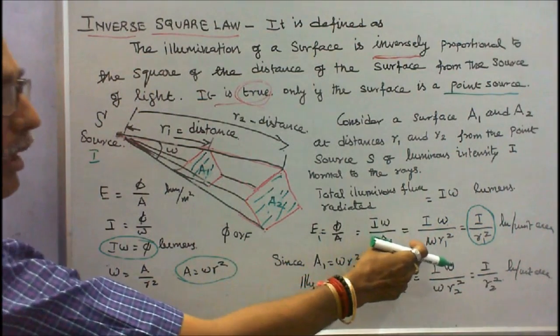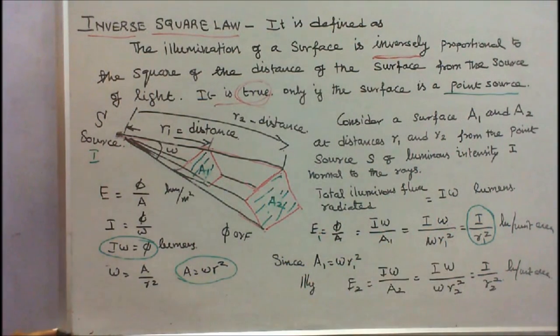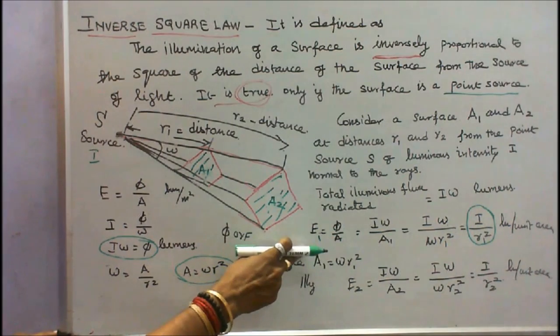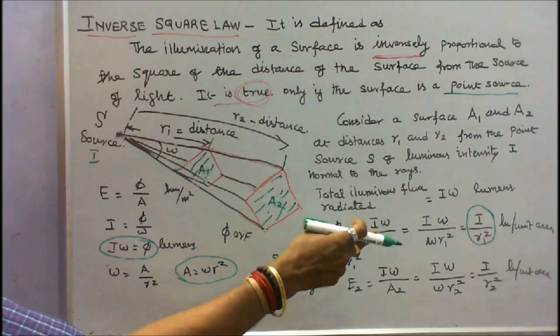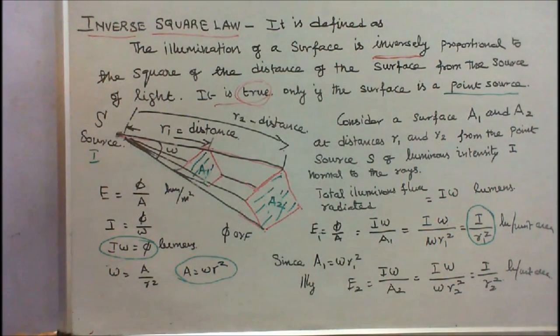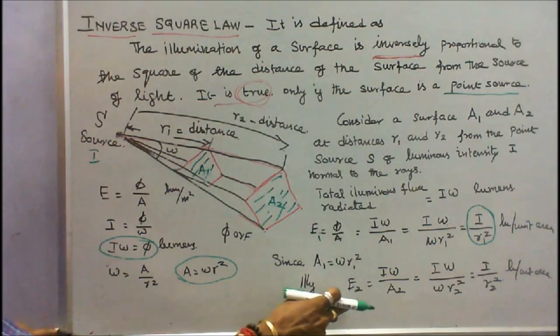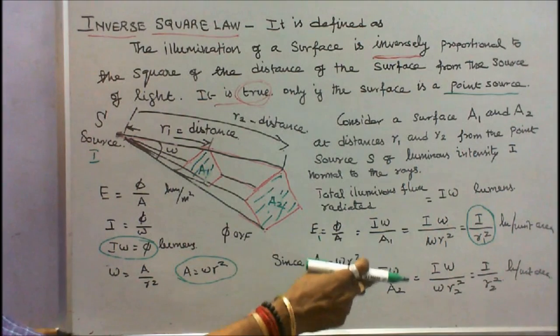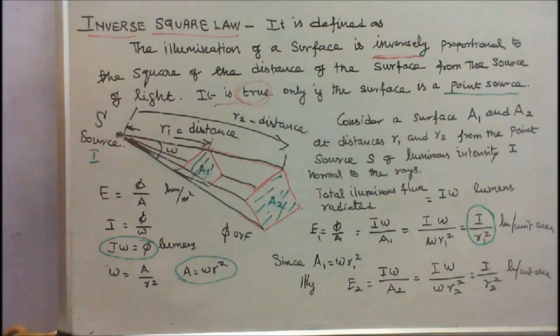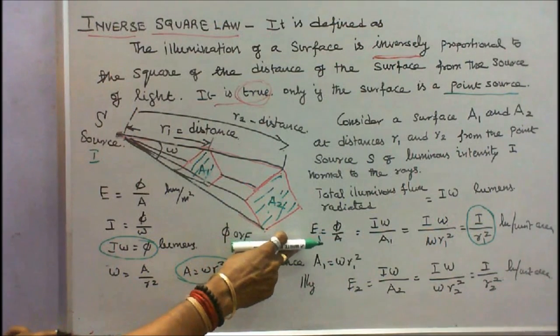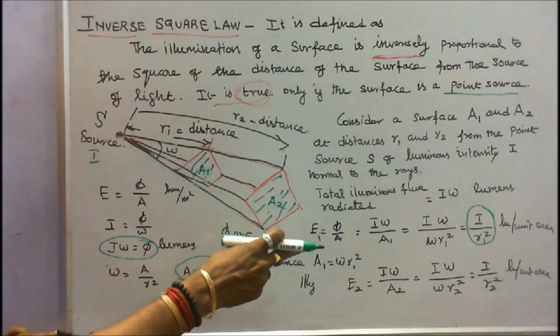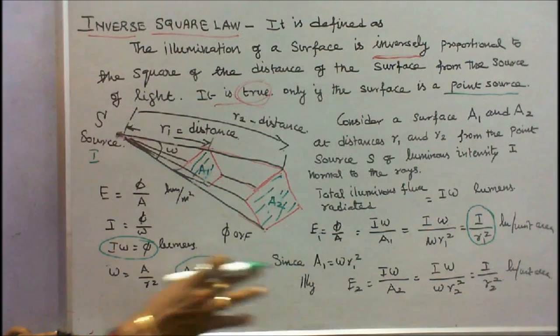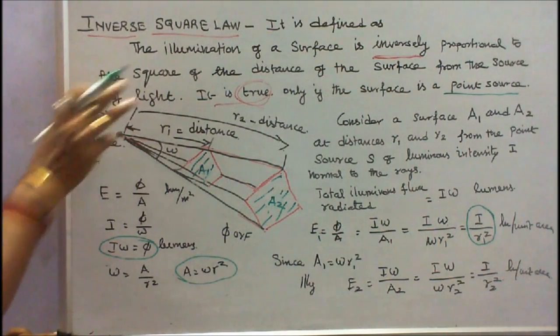I will substitute omega into R1 square. Therefore E1 is equal to I divided by R1 square lumens per unit area. Similarly E2 is equal to I divided by R2 square. Hence, the illumination E is inversely proportional to the square of distance. That is inverse square law.